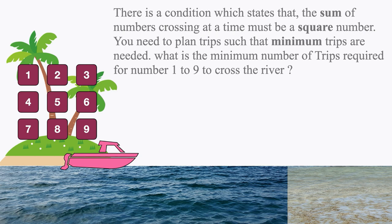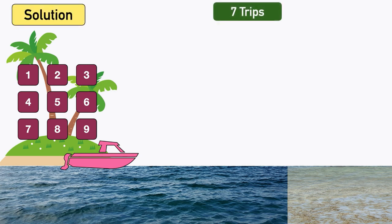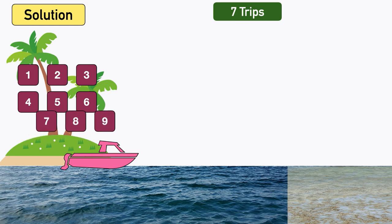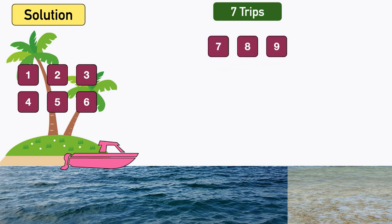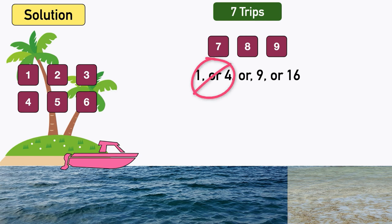The answer is we need only 7 trips to send all digits across the river. The sum of numbers crossing at a time must be a square number. The maximum sum possible using any 3 numbers in range 1 to 9 is 24 (using 7, 8, and 9). So the sum of 3 numbers must be 1, 4, 9, or 16. We can eliminate 1 and 4 because no 3 numbers add up to those (minimum is 6, using 1, 2, and 3). The correct square number is 16, which is 4 squared.